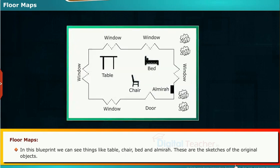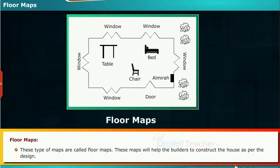Now we are going to see what is a floor map. In this blueprint, we can see things like table, chair, bed and almira. These are the sketches of the original objects. These types of maps are called floor maps. These maps will help the builders to construct the house as per the design.